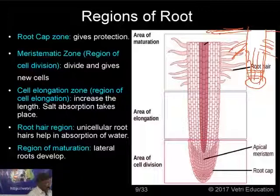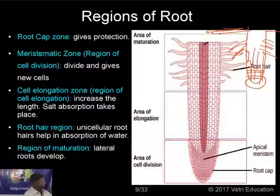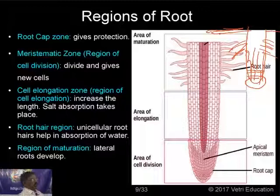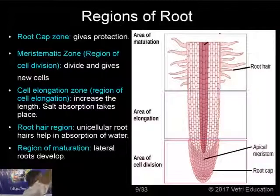At the tip, you can find the root cap, which may be a single layer or sometimes many layers — just like in pandanus. Beyond this is the meristematic tissue, which is always dividing and giving new cells. After the formation of new cells, they elongate in size — that is the elongation zone. Then you can find the formation of root hairs — the root hair region. Beyond that is the area of maturation.